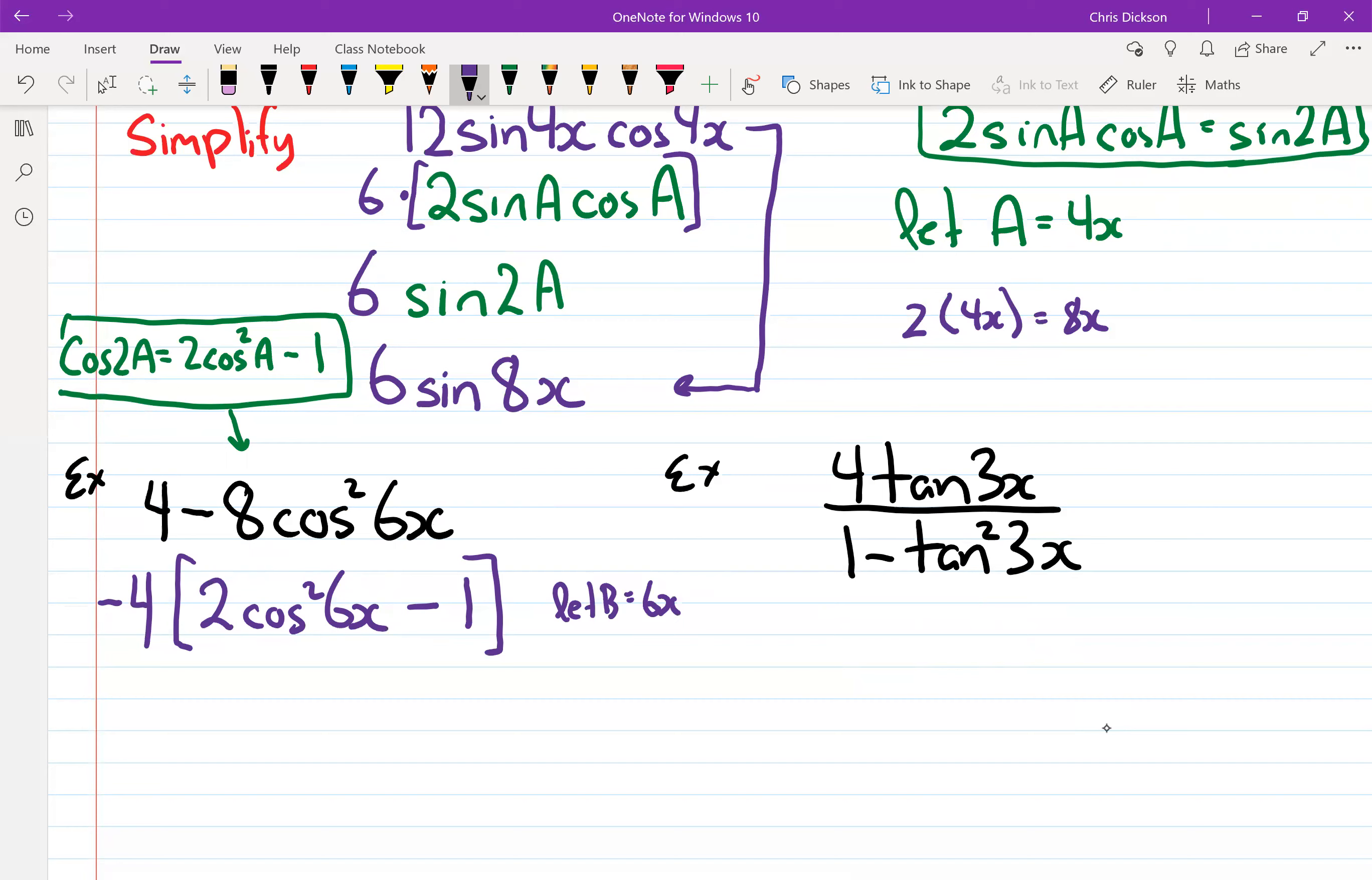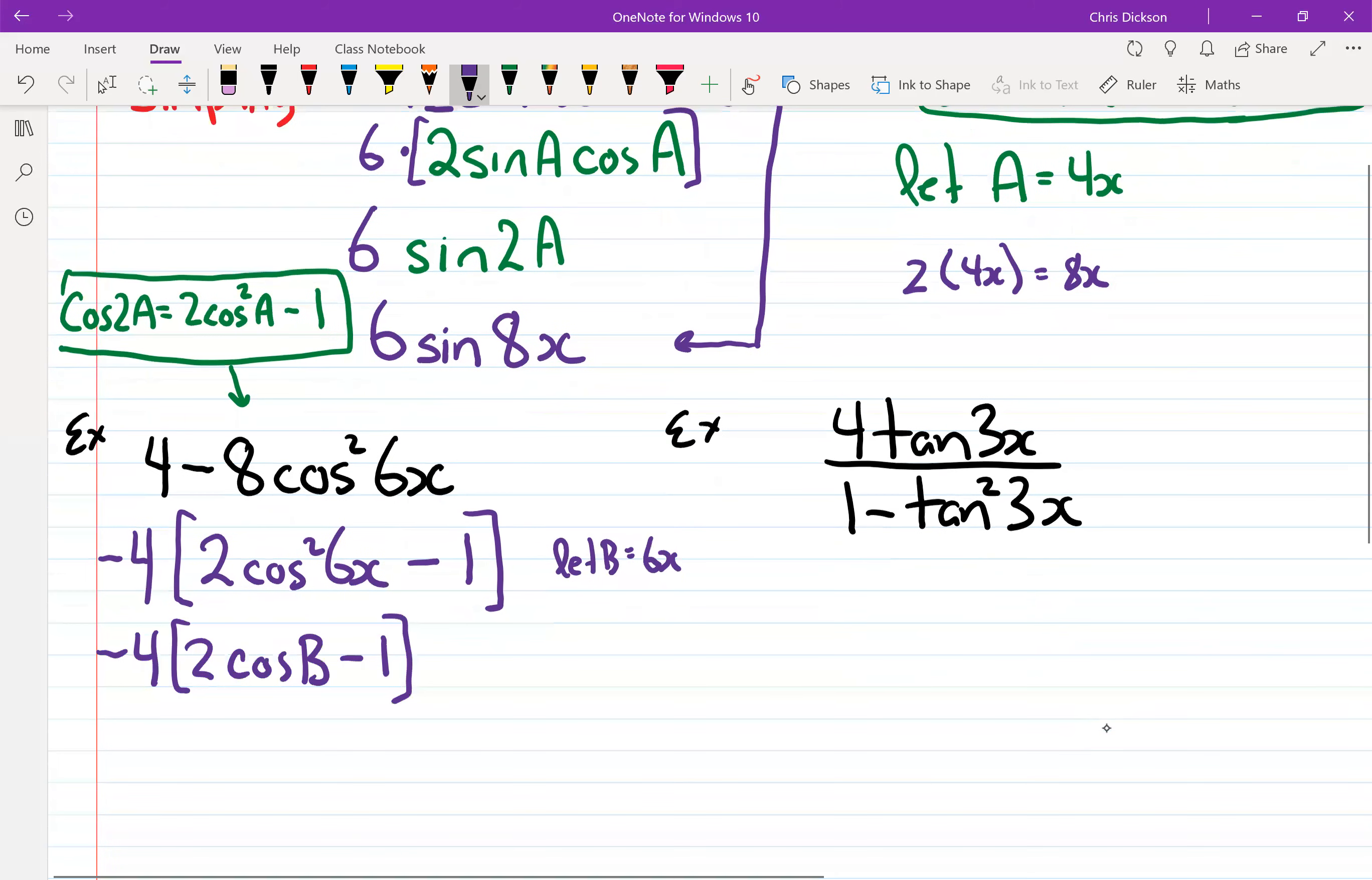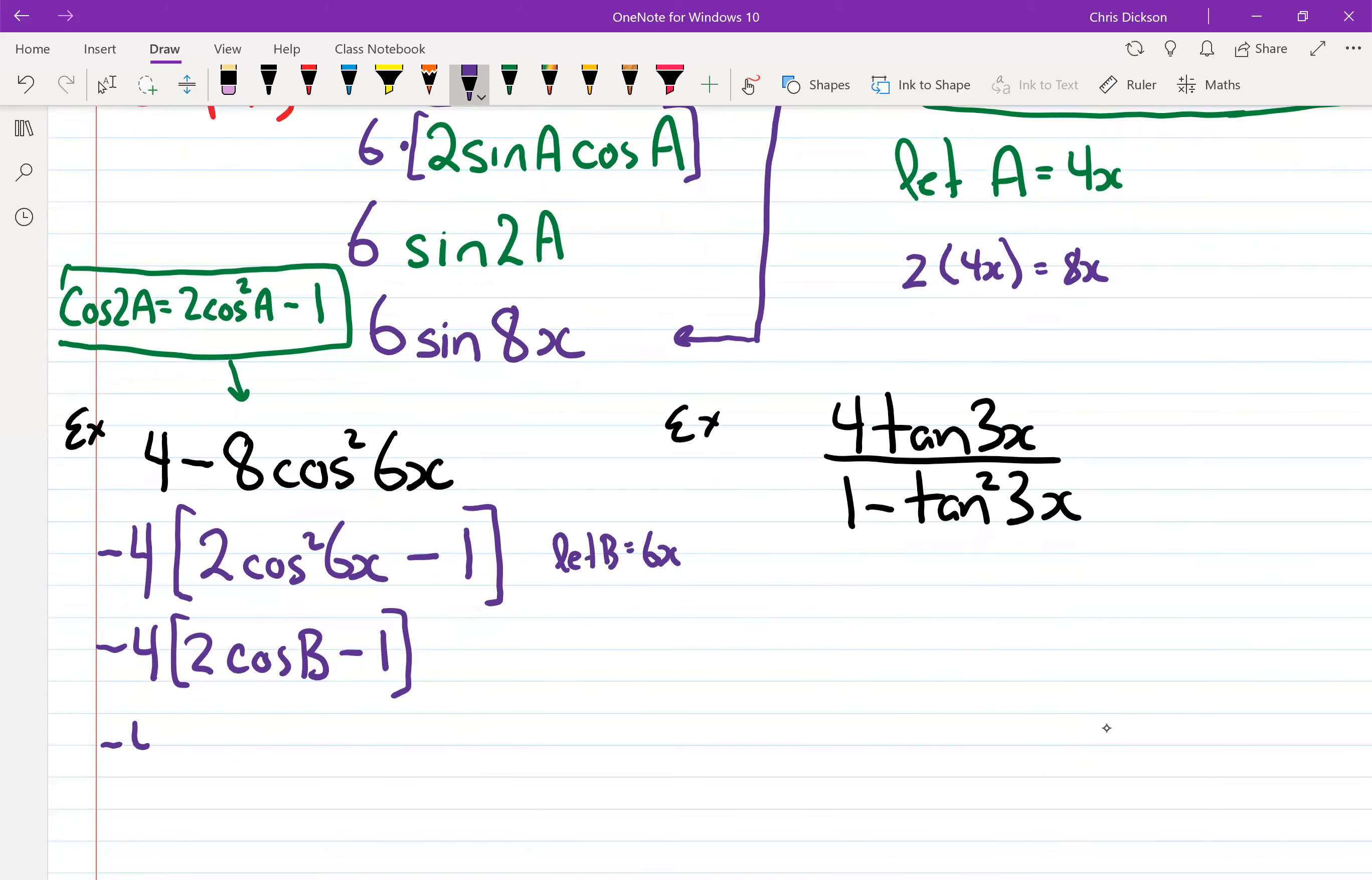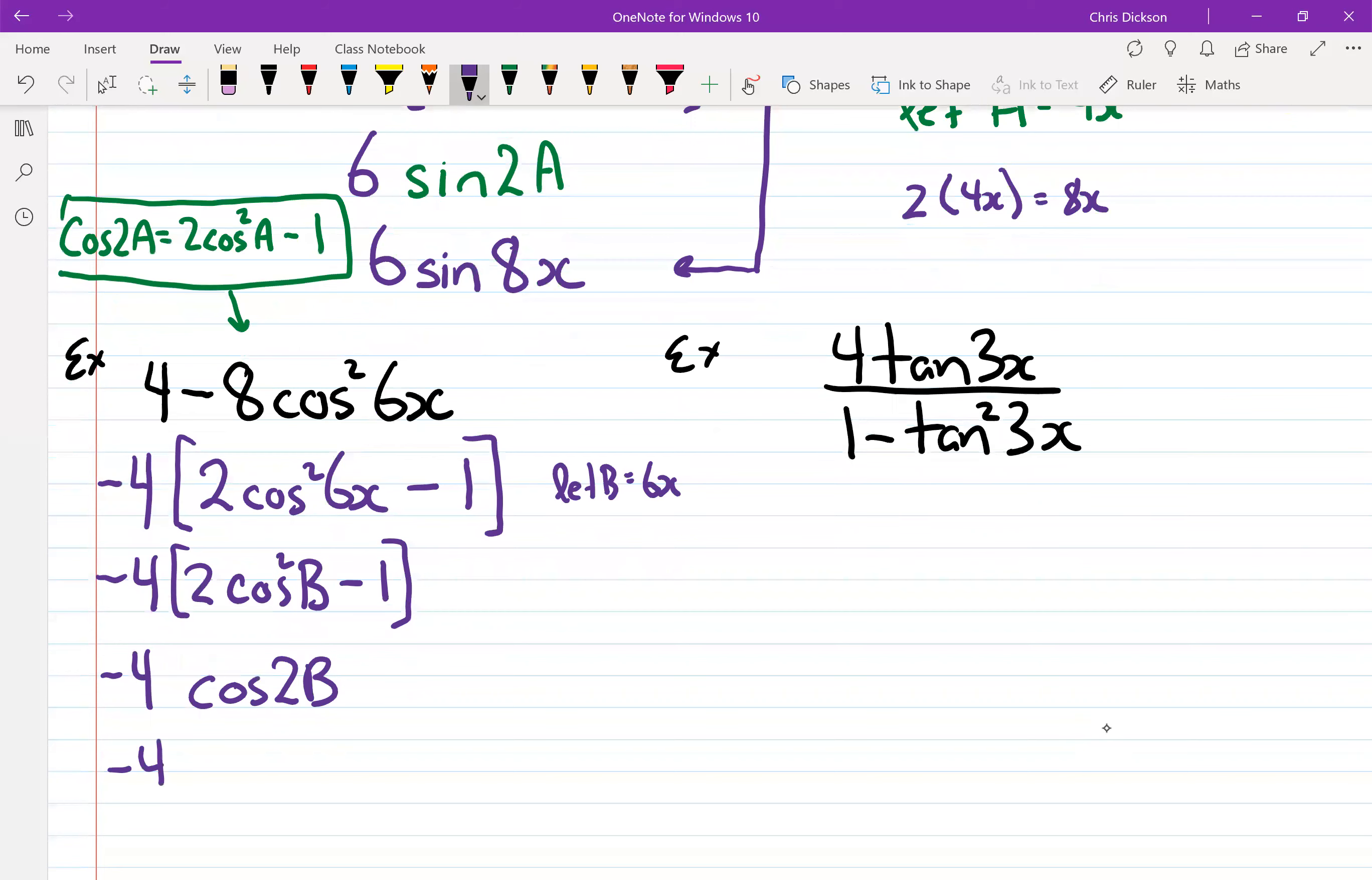So wherever I see 6x I'm going to write a b here, so this would be negative 4, 2 cos b minus 1. Now here would be negative 4, now 2 cos squared b minus 1 is equal to cos 2b. And what was b? Well b was 6x, so negative 4 cosine of 2 times 6 is 12x then.